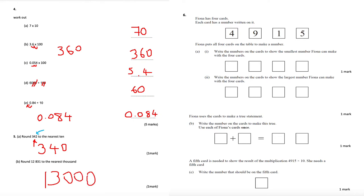Question 6: Fiona has 4 cards, each with a number written on it. Part i: write the smallest number Fiona can make with the 4 digits — the smallest number is 1,459. Part ii: write the largest number — the largest is 9,541.